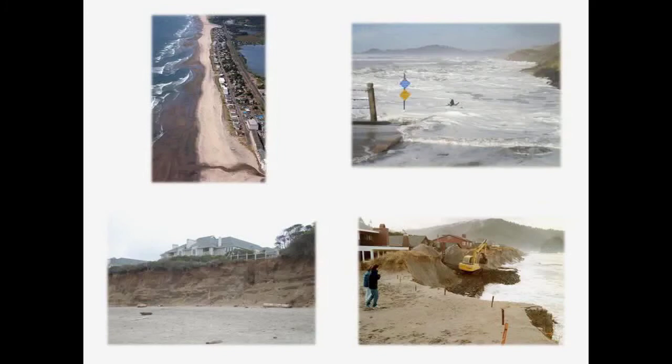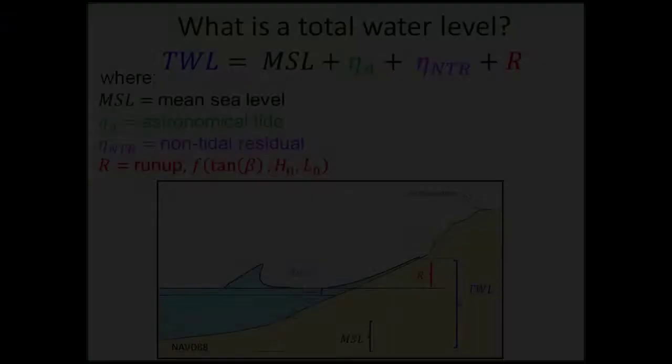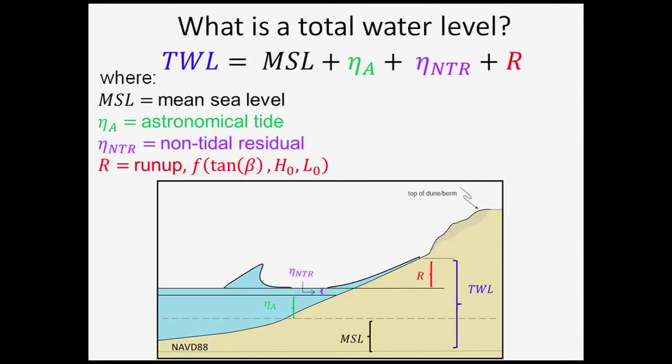In order to better understand these flooding events, we need to pull apart all of the different pieces that make up a high water level. We'll define this as a total water level — imagine stacking all of these pieces of the water level on top of each other. We can add the mean sea level, which is just the average sea level with respect to some datum, to the astronomical tide, which is our deterministic tide that we know fairly well.